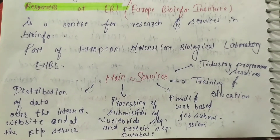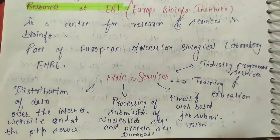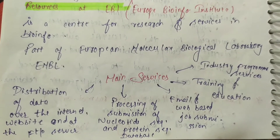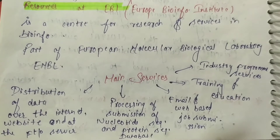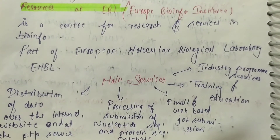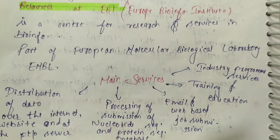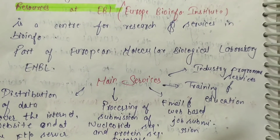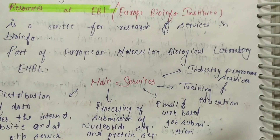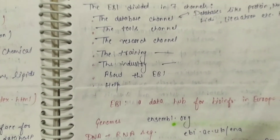Its main services are distribution of data over the internet and other websites. It processes submitted data of nucleotide sequences and protein sequences databases. Its main services also include email and web-based job submissions, as well as training and education industry program services.